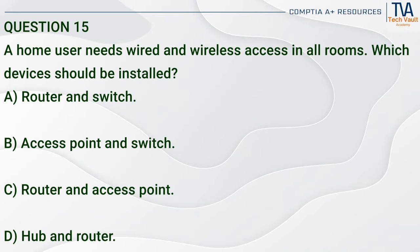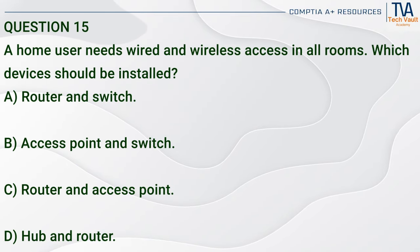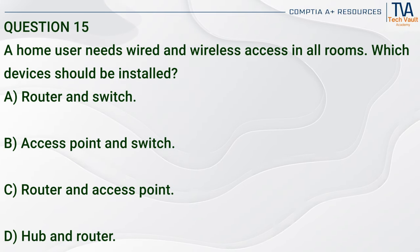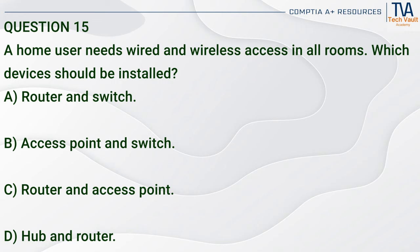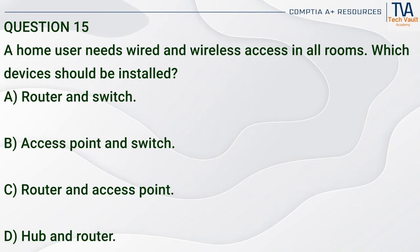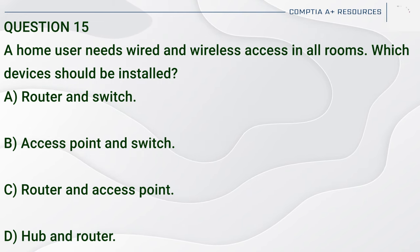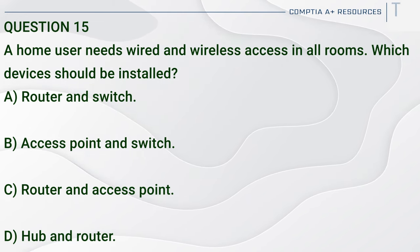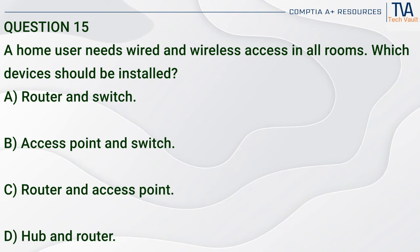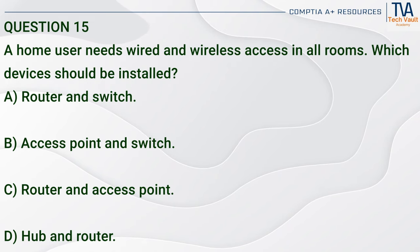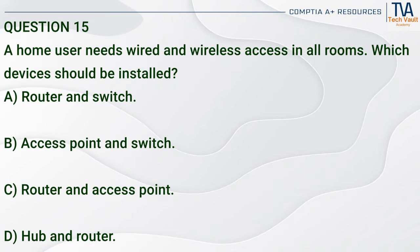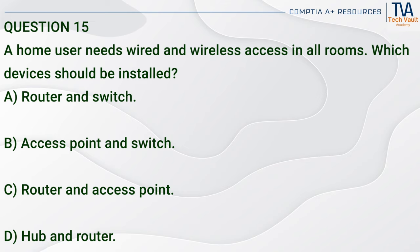Question 15. A home user needs wired and wireless access in all rooms. Which devices should be installed? A. Router and switch. B. Access point and switch. C. Router and access point. D. Hub and router.